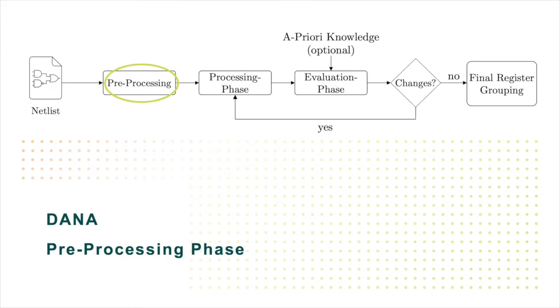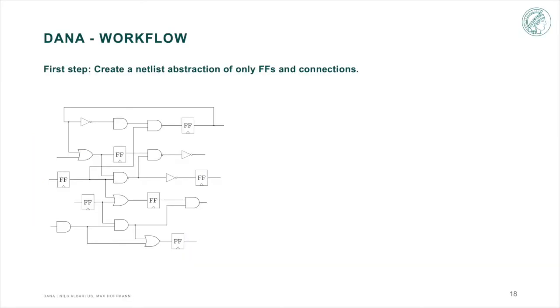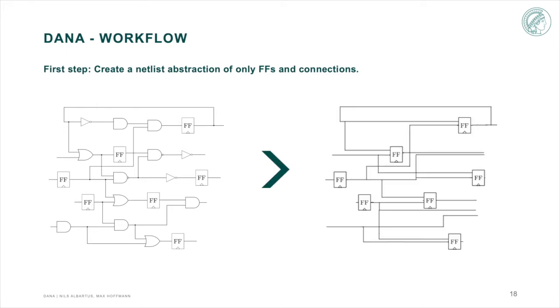Now let's go into more detail of all phases, starting with the preprocessing. In the preprocessing phase, three important things happen. As a first step, we create an abstracted netlist. Since DANA only works on the connection of flip-flops, we first remove all logic and create the abstracted netlist. The intuition here is that data flows between registers. So we only consider flip-flops and other sequential elements and their connection between one another.